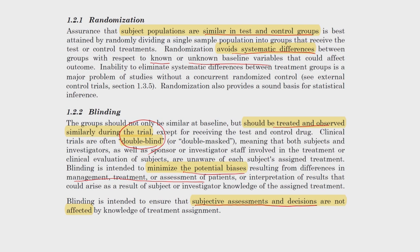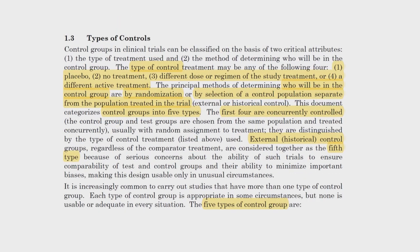Starting from Section 1.3, the guideline discusses control types in detail. The types are: placebo control or no-treatment control, different dosage or low-dose control, active control, dose-response concurrent control, and finally the externally or historically controlled group. In all we have five types of control groups — the first four are concurrent groups going through randomization, and the fifth is the external or historical control.